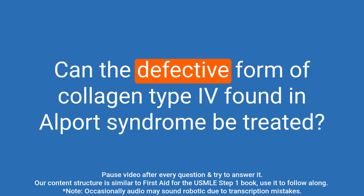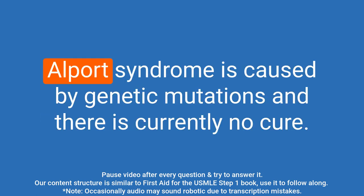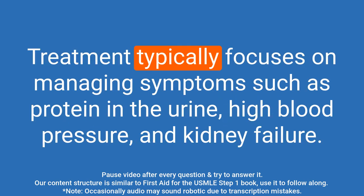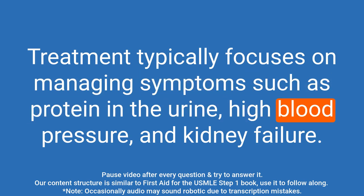Question: Can the defective form of collagen type IV found in Alport syndrome be treated? Answer: Alport syndrome is caused by genetic mutations and there is currently no cure. Treatment typically focuses on managing symptoms such as protein in the urine, high blood pressure, and kidney failure.